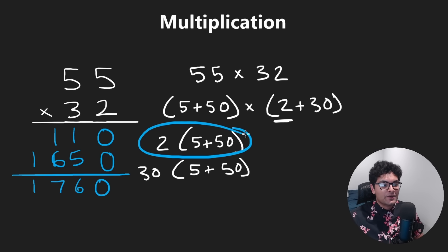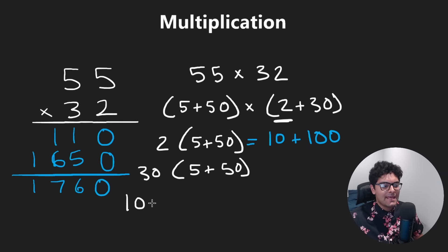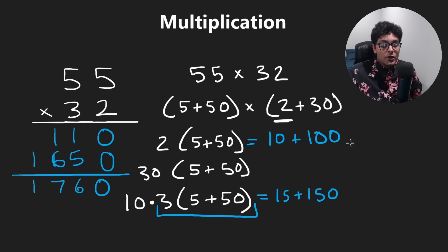And this part over here, you can notice, is going to be 10 plus 100. This part over here, I'm actually going to rewrite it. I'm going to make it even more simple. Why not? 30? That's too big. I'd rather have 10 times 3, and then multiply that by 5 plus 50. So now, just focusing on this part over here, this is going to be equal to 15 plus 150. And so, this becomes 110, which look, it looks pretty familiar over here.